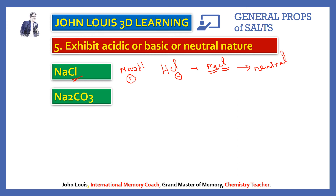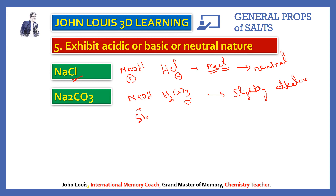The next example is sodium carbonate. Sodium comes from the strong base sodium hydroxide, and carbonate comes from the weak acid carbonic acid (H2CO3). The negative ion is from a weak acid and the positive ion is from a strong base. Therefore when mixed, this will be slightly alkaline — the resulting solution will be slightly basic.